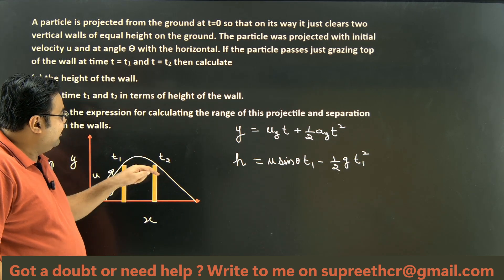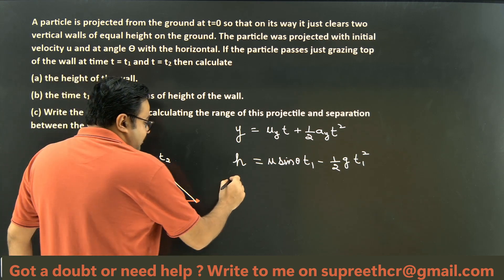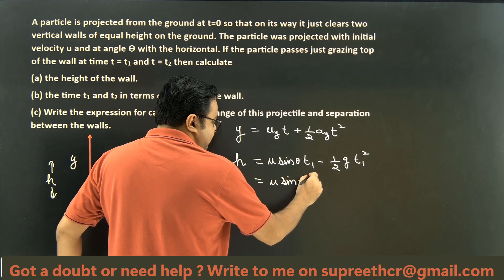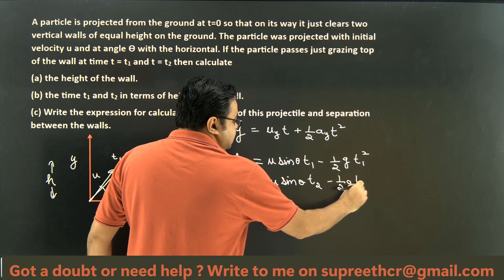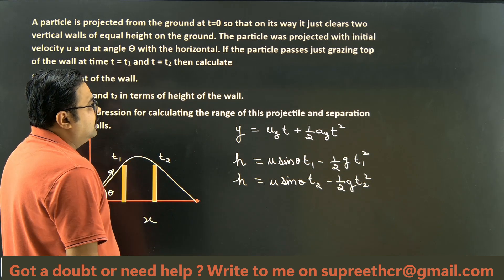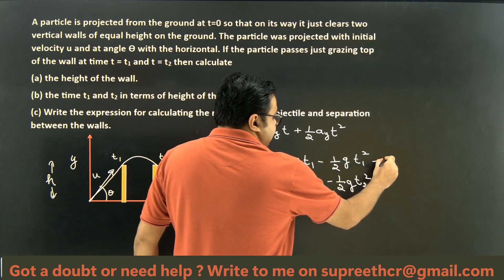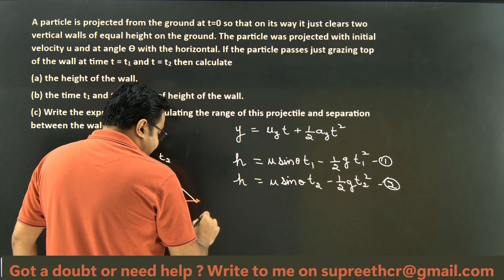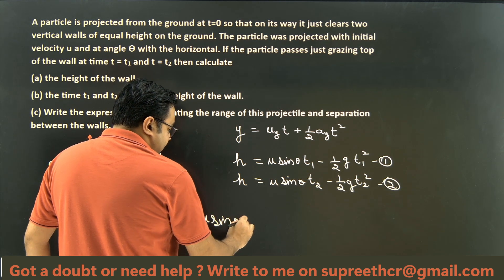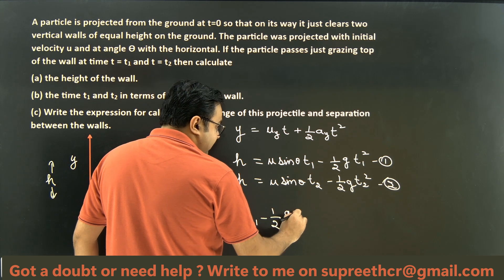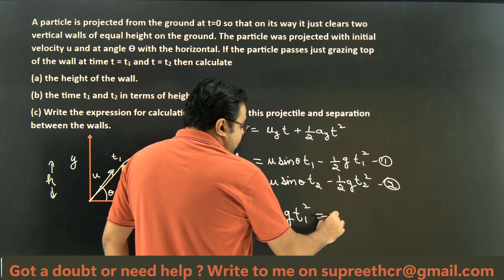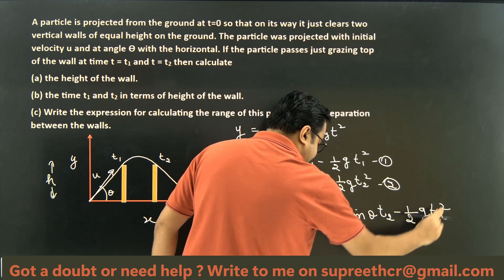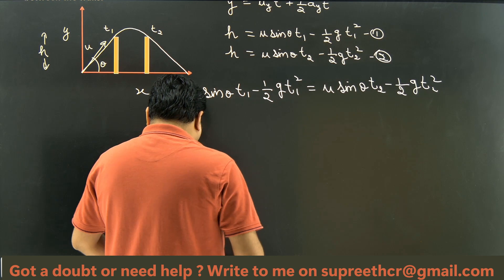A similar equation can be written for when the same particle clears the second wall. The initial velocity is the same, but this time the time is T2: H equals U·sinθ·T2 minus (1/2)·G·T2². Let's call the first equation Equation 1 and the second Equation 2. Now we equate both: U·sinθ·T1 minus (1/2)·G·T1² equals U·sinθ·T2 minus (1/2)·G·T2².